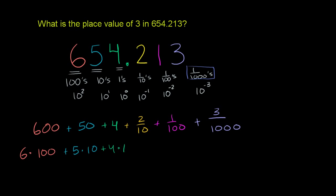I keep doing that in the wrong color. Plus 4 times 1, plus 2 times 1 tenth, plus 1 times 1 over 100. And then finally, plus 3 times 1 over 1,000.